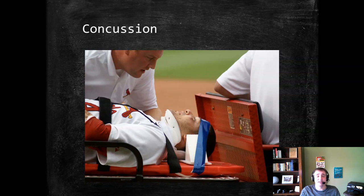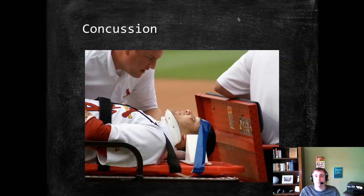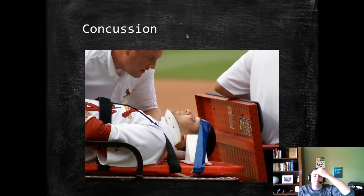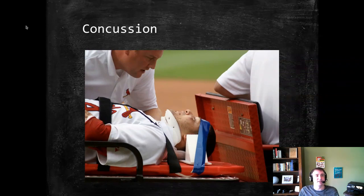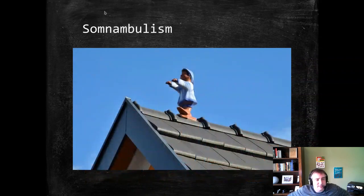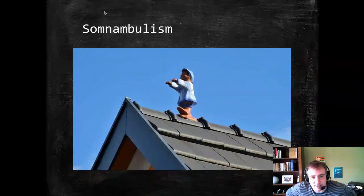A concussion, which is a form of brain damage, can affect the way we process information about the world around us. But people have concussions all the time and don't commit crimes, so it's going to be a pretty rare instance where this results in a judge dismissing charges or a not-guilty verdict from the jury. If you have a concussion, this does not mean you can go around murdering people and expect no charges.